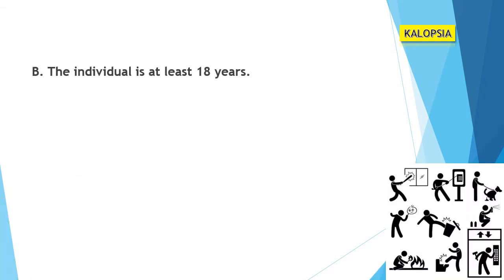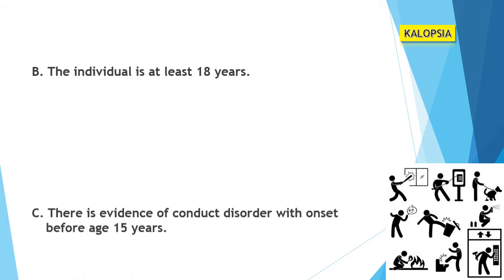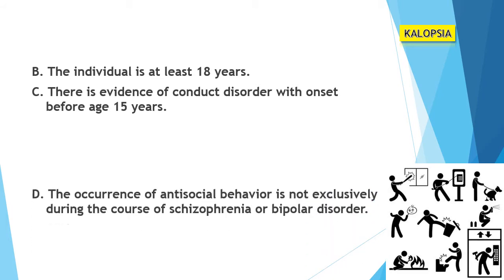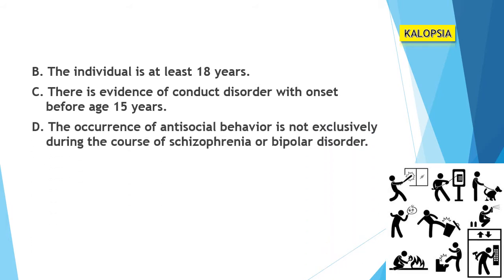Other than these criteria, the individual should be at least 18 years of age. There must also be evidence of conduct disorder with onset before age 15 years, and the occurrence of antisocial behavior should not occur exclusively during the course of schizophrenia or bipolar disorder.